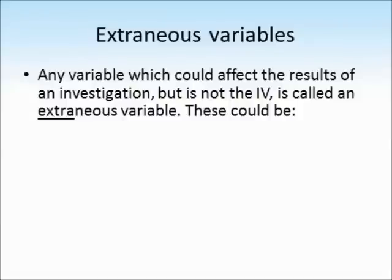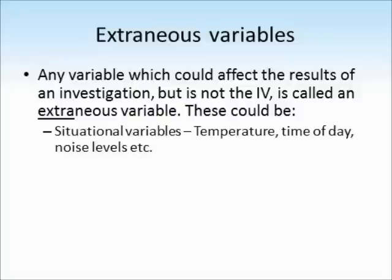One type of variable that researchers don't want in their studies is called an extraneous variable — any variable which could affect the results of an investigation but which isn't the IV. Use the word 'extra' in extraneous as a clue: it's just an extra variable which might interfere with the results. These could be situational variables, such as the temperature, time of day, or noise levels. In a memory experiment, if one group does it at 7am and another at 5pm, differences in how awake and alert they are could affect the results — and those differences have nothing to do with the independent variable.